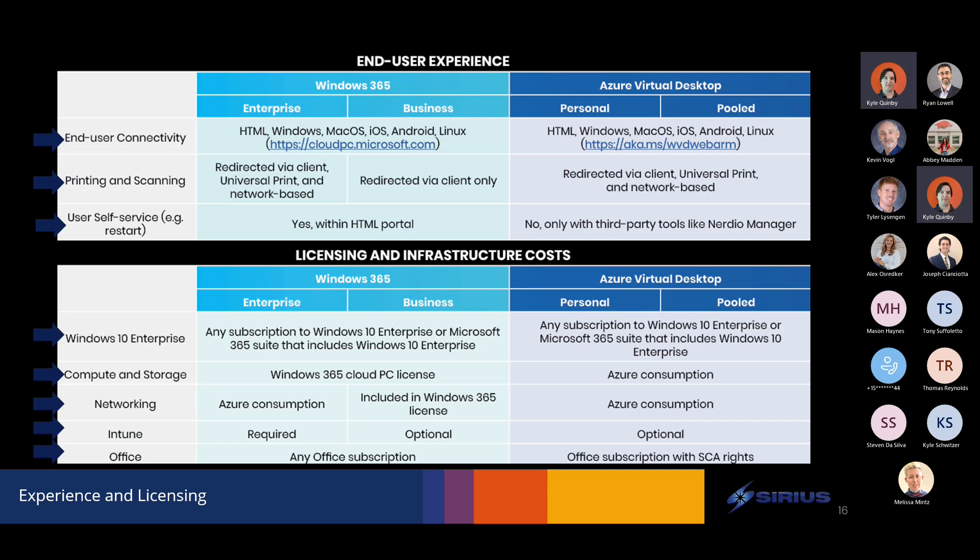On the networking side: for Windows 365 Business, it's all included. On the enterprise side, since you are connecting back into your Azure VNet, you will have some consumption costs there. Intune is absolutely required for enterprise, and optional for business. You can have users installing software on their own. For AVD, since it's almost always domain-joined, you also have all your traditional IT tools to control images — SCCM could be an option, with a whole host of tools available for delivering software updates.